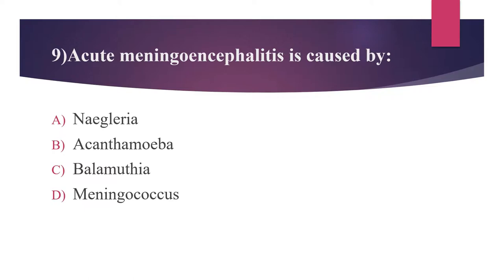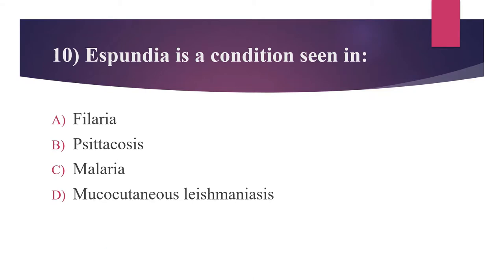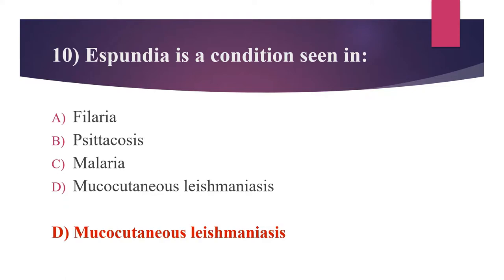The tenth question: Espundia is a condition seen in which of the following? Option A: Filaria. Option B: Psittacosis. Option C: Malaria. Option D: Mucocutaneous leishmaniasis. The answer is mucocutaneous leishmaniasis. There are three main forms of leishmaniasis: visceral (kala-azar), which is the most serious; cutaneous, which is the most common; and mucocutaneous. The vector is the sandfly. Espundia is caused by Leishmania braziliensis, affecting the mucous membranes particularly of the nose and mouth, resulting in grossly destructive changes.